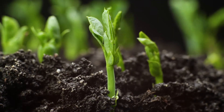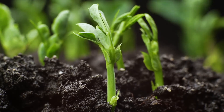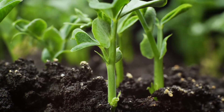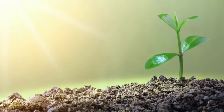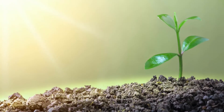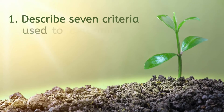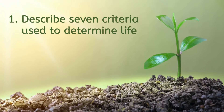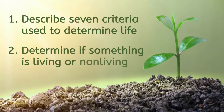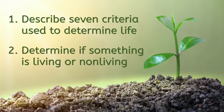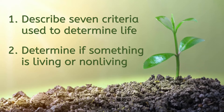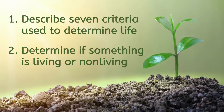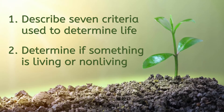As you may have guessed, this lesson is all about what it takes for something to be considered alive. By the end of our time here, you should be able to describe seven characteristics that we use to determine life, and determine when something is living or non-living. We'll practice with an example to check your understanding. Ready? Let's go!